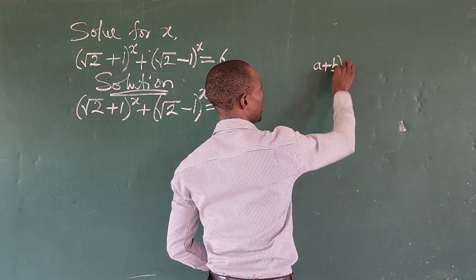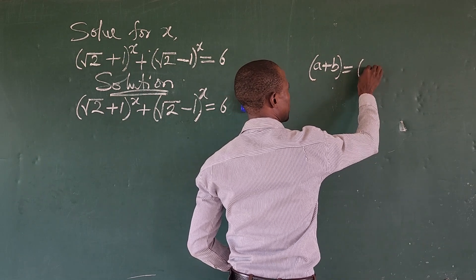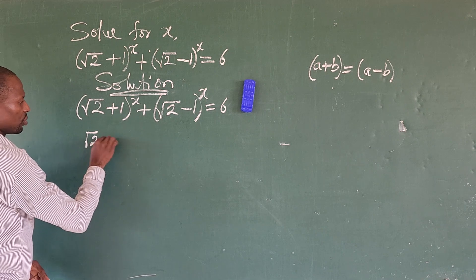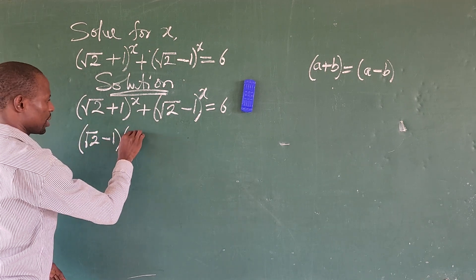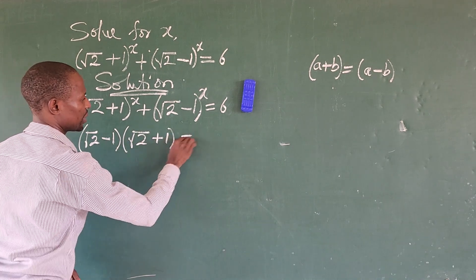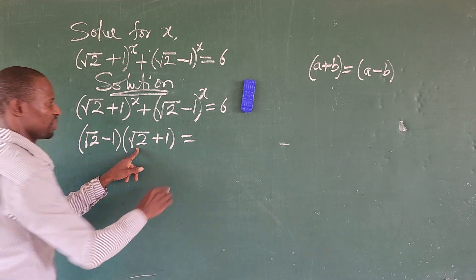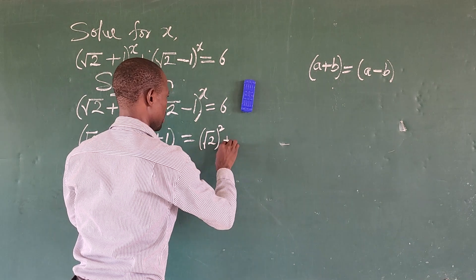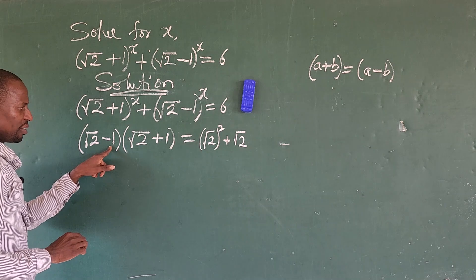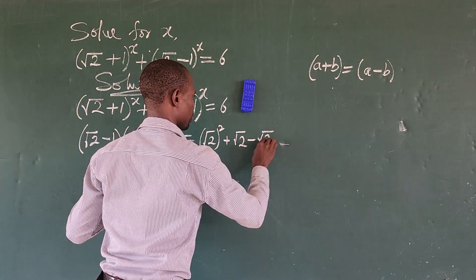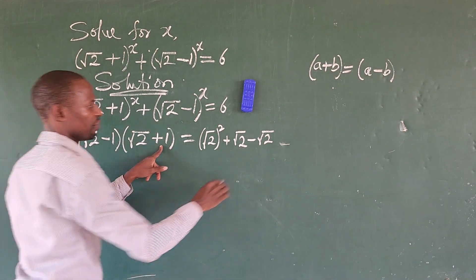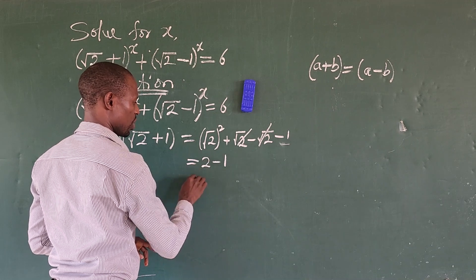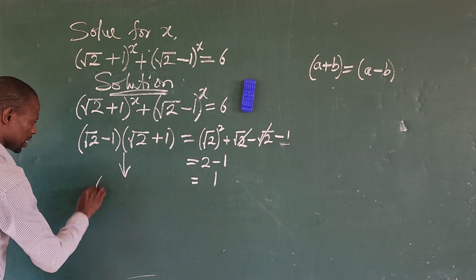Remember from our surds that if you have (a + b), the conjugate is (a - b). So I multiply (√2 - 1) by its conjugate (√2 + 1). This gives us: √2 squared, plus √2, minus √2, minus 1. The middle terms cancel, leaving 2 minus 1, which equals 1.